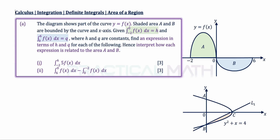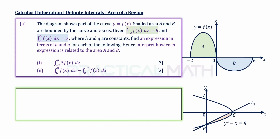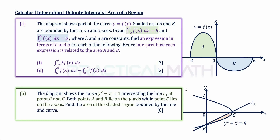In a separate part B of this question, the diagram shows the curve y² + x = 4 intersecting line L1 at points B and C. Both points A and B lie on the y-axis while point C lies on the x-axis. Find the area of the shaded region bounded by the line and the curve — that's a 6-mark question. You might want to pause this video to try these two parts before watching the solution.